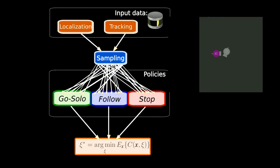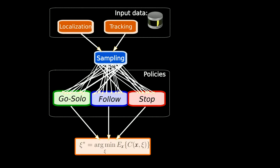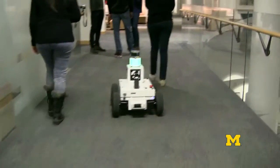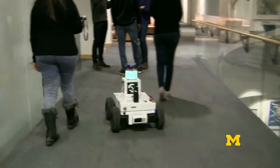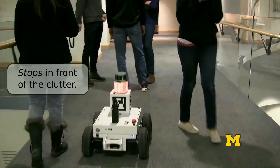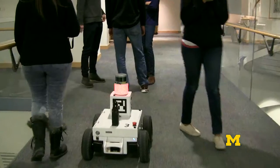These thought experiments capture agent-agent interactions as well as interactions with the policy being evaluated. Watch as MPDM reacts to the agent's sudden change in direction. It then waits for a clear path before going solo around the group of people.